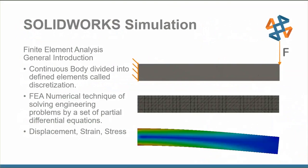Before we get into that, I wanted to lay some groundwork and cover what SOLIDWORKS Simulation is and where the mesh plays a role. SOLIDWORKS Simulation is our finite element analysis software, allowing us to do structural analysis. You take a continuous body and divide it up into elements — this is called discretization — and this is when you actually generate a mesh. Complex equations are solved across that mesh to give us outputs like stress, strain, and displacement. Today I want to cover the different techniques of generating a mesh and how to use those together to come up with a proper mesh.